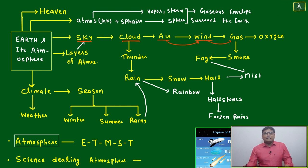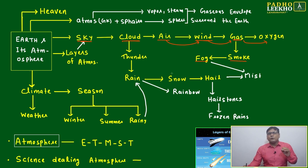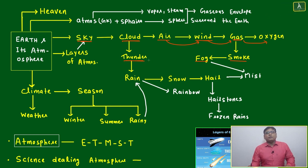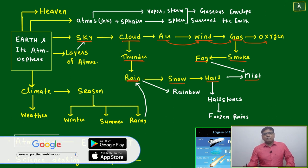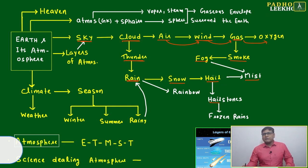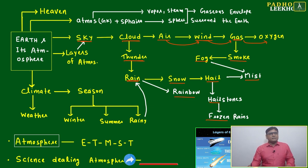When wind flows, different types of gases form. This gas can take the form of smoke, fog, or one of the life gases — that is oxygen. Now coming to clouds: collision of clouds creates thunder, due to thunder rain comes, and after rain it can be snow, hail, or mist. Hail can form hailstones — sometimes called frozen rain. Due to rain, a rainbow will also be created.